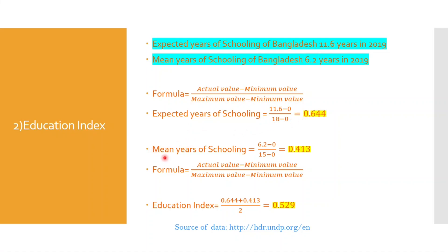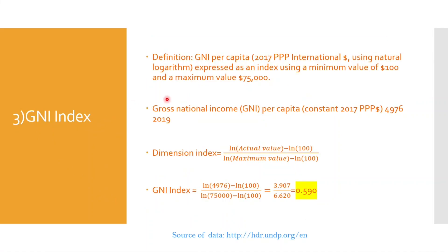Then we calculate the mean years of schooling. Using the same formula, the actual value for Bangladesh in 2019 is 6.2 years, minus 0, divided by 15 minus 0. We get the result of 0.4133. We then calculate the Education Index by adding expected years of schooling and mean years of schooling and dividing by two. We get the result of 0.529, which is the Education Index.